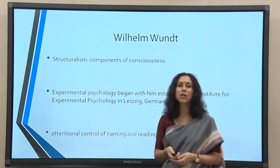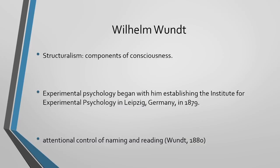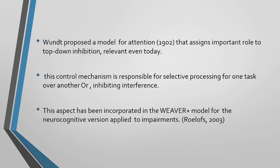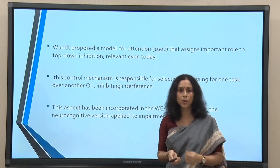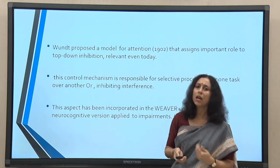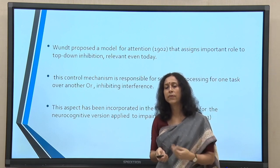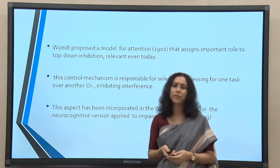One of Wundt's works dealt with the domain of attention — specifically, attention control of naming and reading for both typical as well as disordered language. He proposed a model for attention in the year 1902 that assigns an important role to top-down inhibition. Top-down and bottom-up are the two types of processing that human beings engage in all the time, something we have been referring to and will refer to more as we look at experimental work.